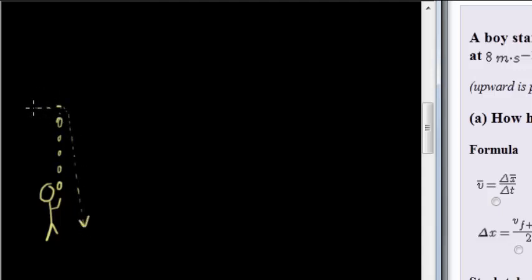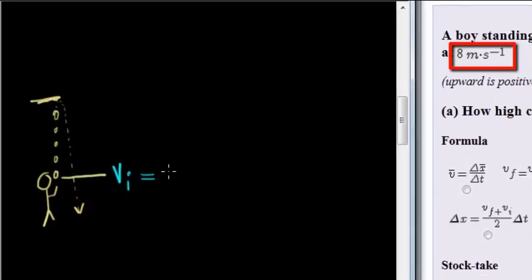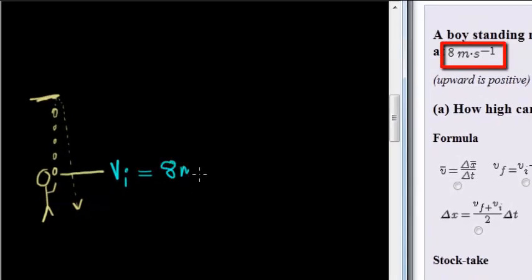Now what is that maximum height that it can reach if they tell us that it was thrown at an initial velocity of eight meters per second? So the ball is thrown up with an initial velocity.